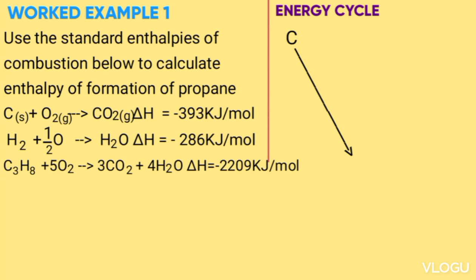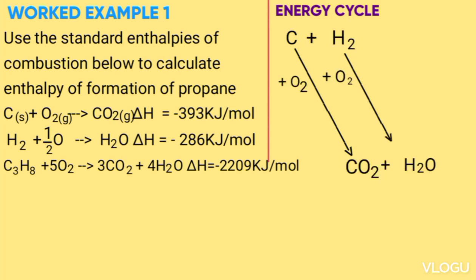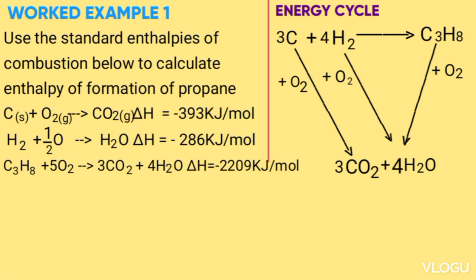The energy cycle is shown below. Carbon → CO₂ and Hydrogen → H₂O represents the direct route. The indirect route is carbon + hydrogen → C₃H₈ (propane), then propane → CO₂ + H₂O. Balancing the number of carbon and hydrogen: 3 moles of carbon give 3 moles of CO₂, and 4 moles of hydrogen give 4 moles of H₂O.